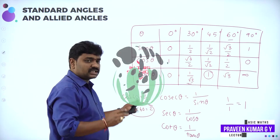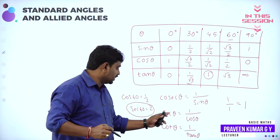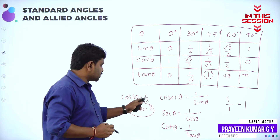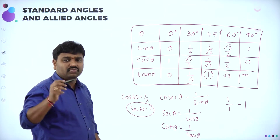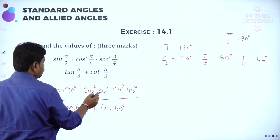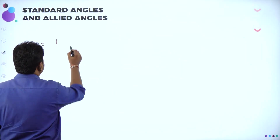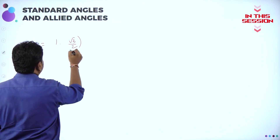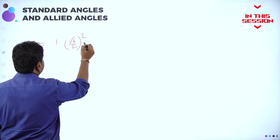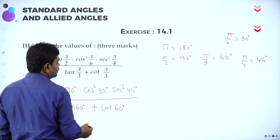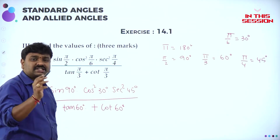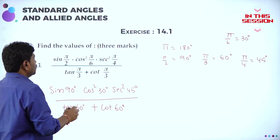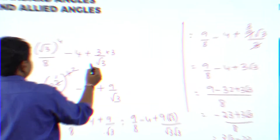cos 60 is 1/2, secant is the reciprocal of cos, so reciprocal of 1/2 is 2, into cos² 30. cos 30 is √3/2, square means whole square, into secant² 45. Secant is the reciprocal of cos, so it will be √2.